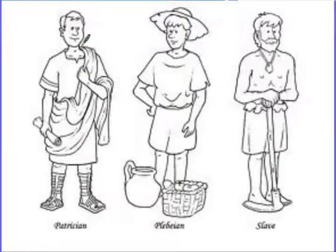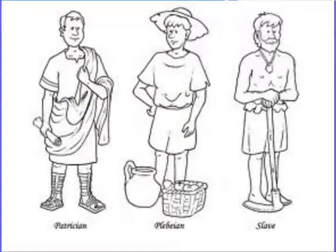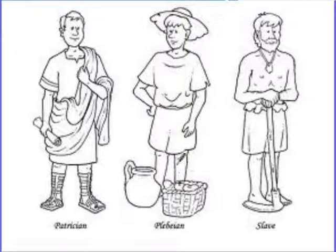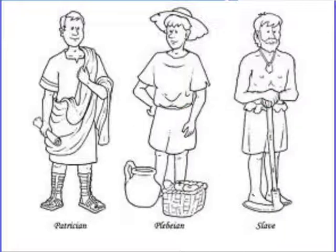Here we see a patrician who might look like what you would imagine a Roman would look like based on movies or TV shows — the dress, the nice shoes, looking ready to run the government. Our plebeians are going to be poor farmers, and our slaves are not going to be well-dressed, forced to do whatever the patricians or upper class tells them to do.